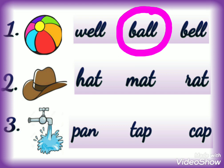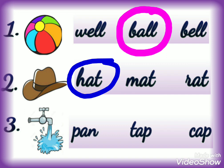This is the picture of hat. We will read all three options. First option is H-E-L-L, hat — yes, this is the correct answer, so we will circle this word. Next option is M-E-L-L, mat — yeh answer thik nahi hai. Third option is R-E-L, rat — yeh option bhi thik nahi hai. Toh hum badhte hain apne agle number ki aur.